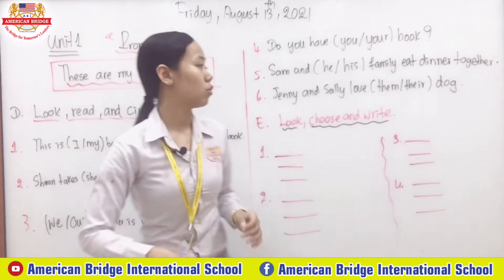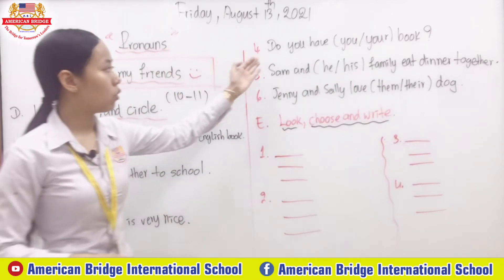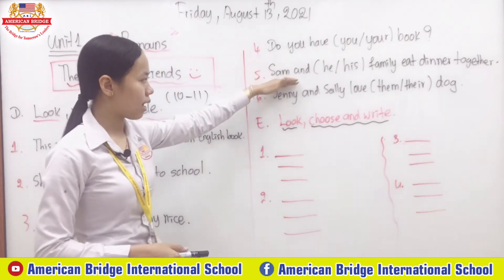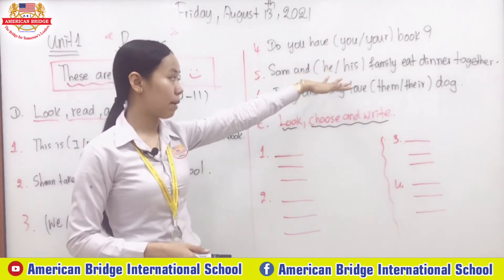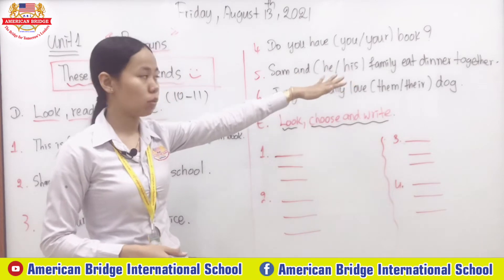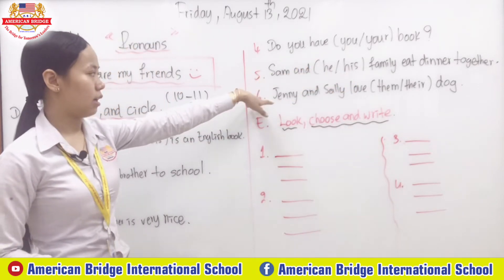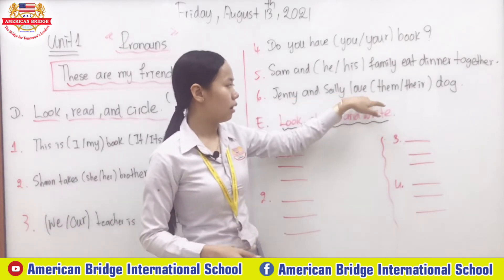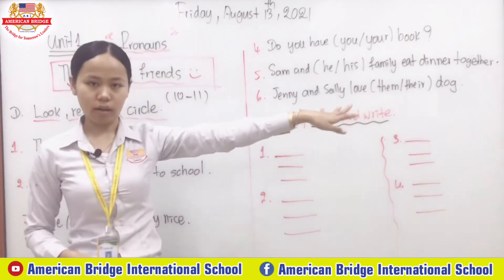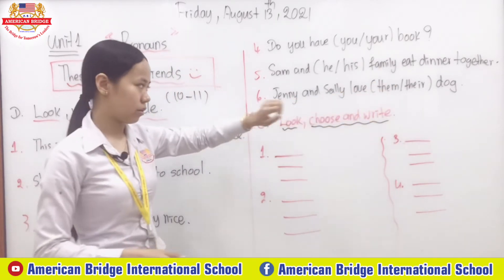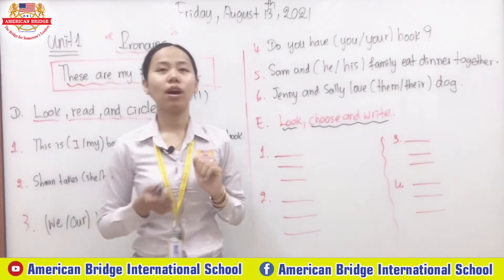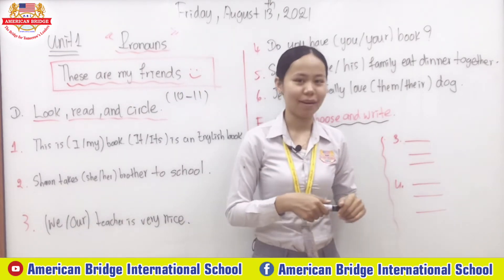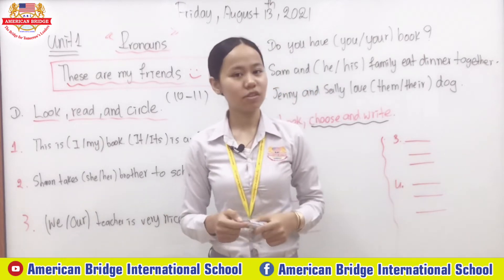Number four: do you have 'you' or 'your' book? Number five: Sam and 'he' or 'his' family eat dinner together. Number six: Jenny and Sally love 'them' or 'their' dog. I'd like you to work on this part for around five minutes, and then we will come back and check the answers altogether. Ready? Let's go.